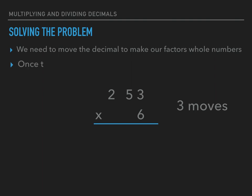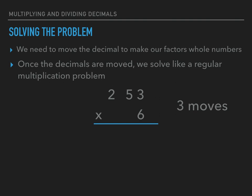Once those decimals are moved we can solve this problem like a regular multiplication problem. So now I have two hundred fifty-three times six. Starting with the last place values: six times three equals eighteen, so I'll carry the one. Five times six equals thirty, plus one equals thirty-one, carry the three. Six times two equals twelve, plus three equals fifteen. So two hundred fifty-three times six equals one thousand five hundred eighteen.